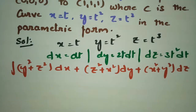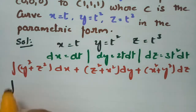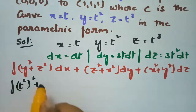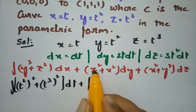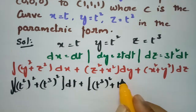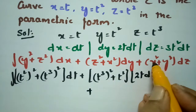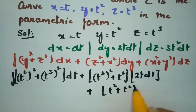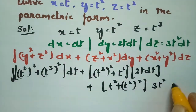Substituting: y = t², so y² = t⁴; z = t³, so z² = t⁶. Then dx = dt. For the second term: z² = t⁶, x = t so x² = t², and dy = 2t·dt. For the third term: x² = t², y² = t⁴, and dz = 3t²·dt.